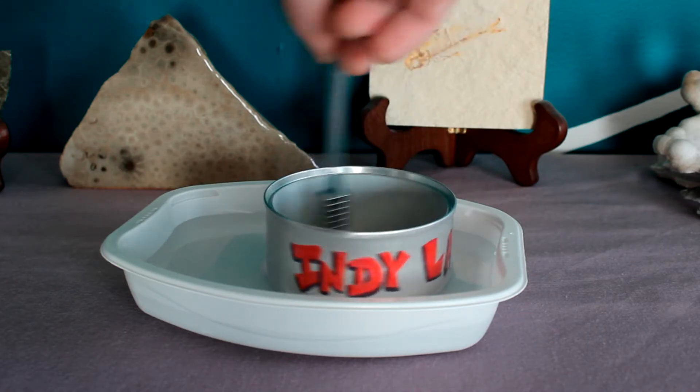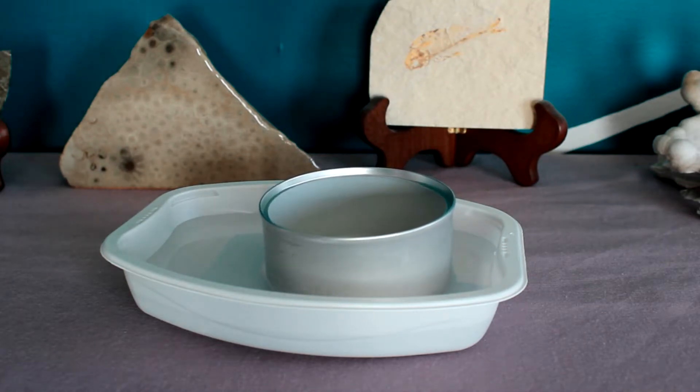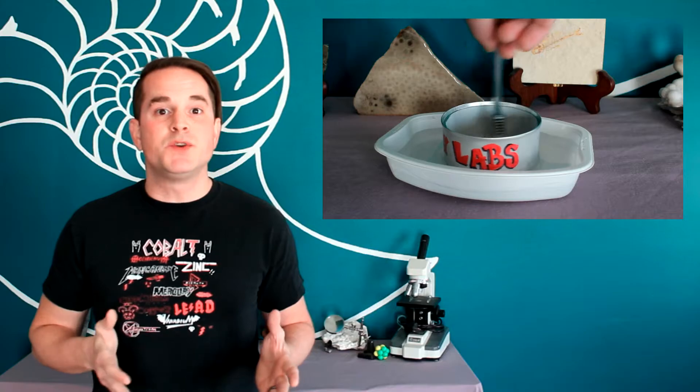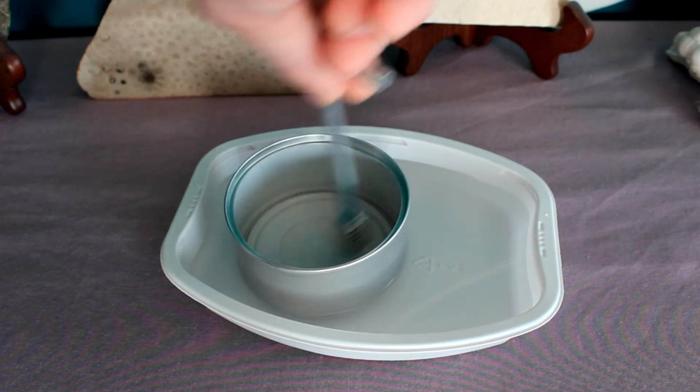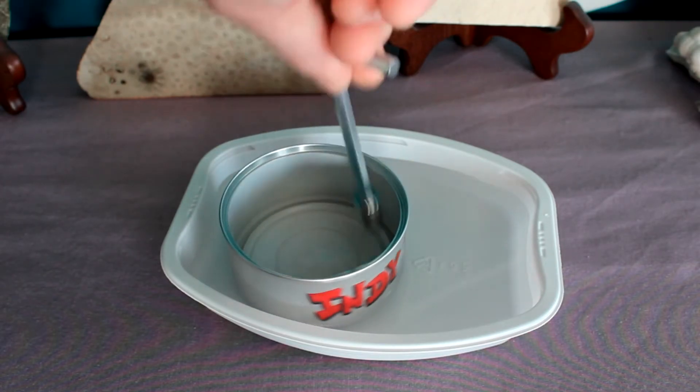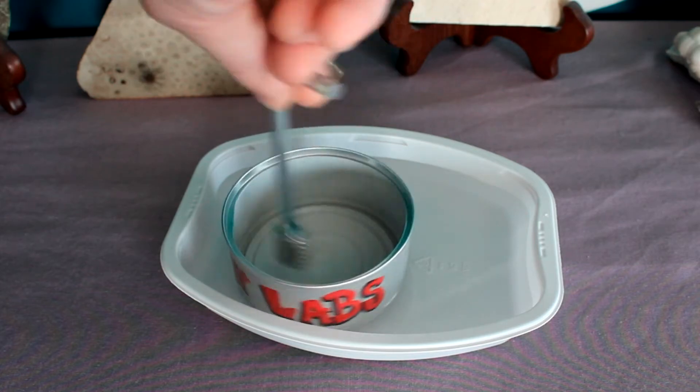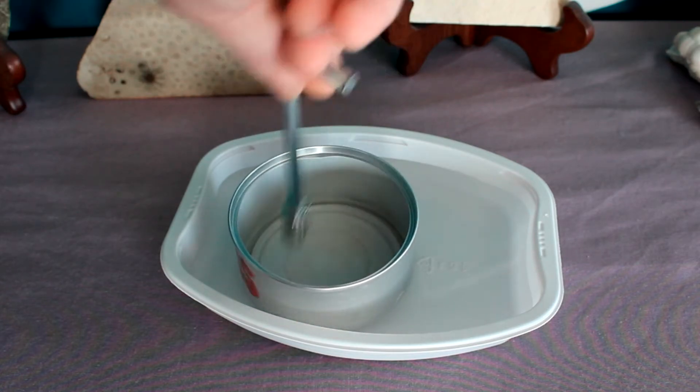Even though the aluminum isn't attracted to a magnet, we've been able to cause it to move using induced eddy currents. Now wait a minute though. Doesn't Lenz's Law say that the induced magnetic field should be in opposition? So why then is the can moving in the same circular motion that our magnets are moving?